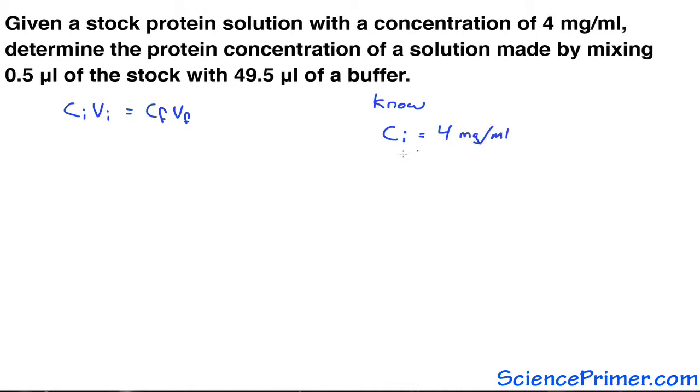Looking at the question, we know that the initial concentration is 4 milligrams per mil. The initial volume is the 0.5 microliters that is transferred.